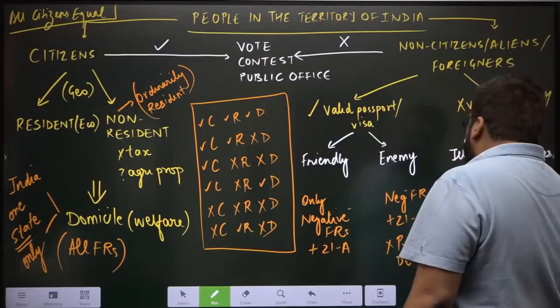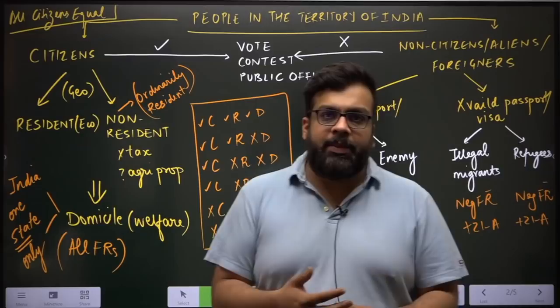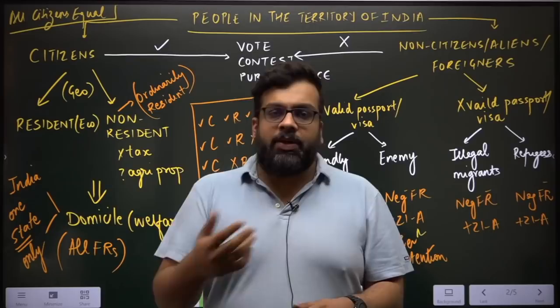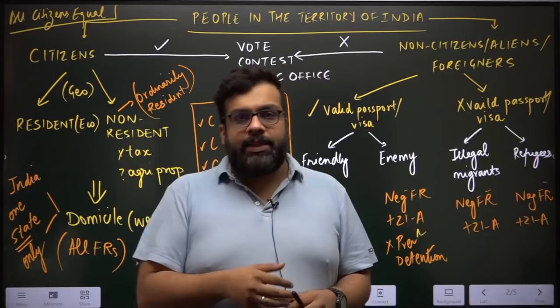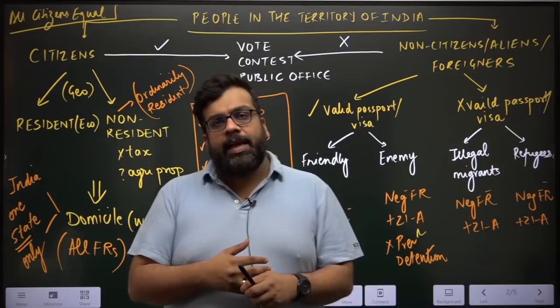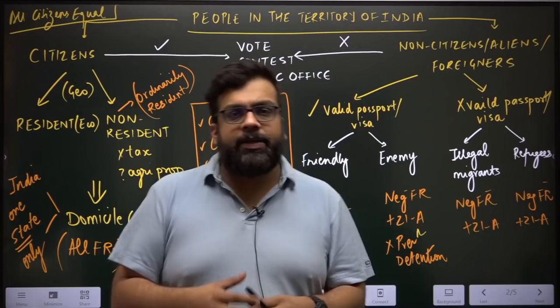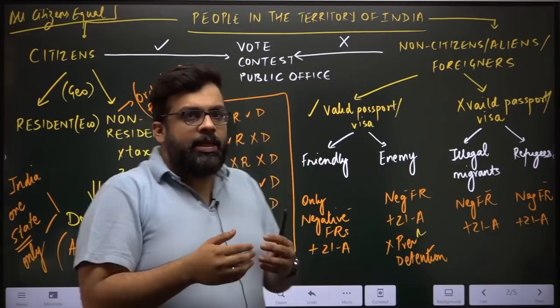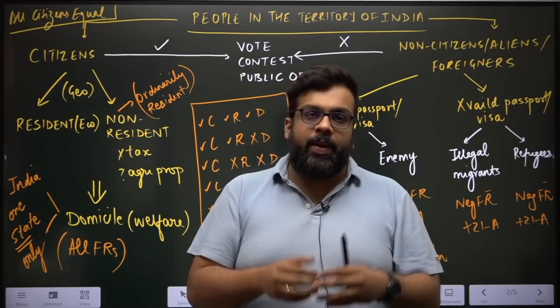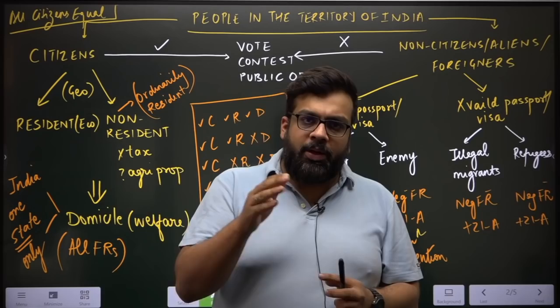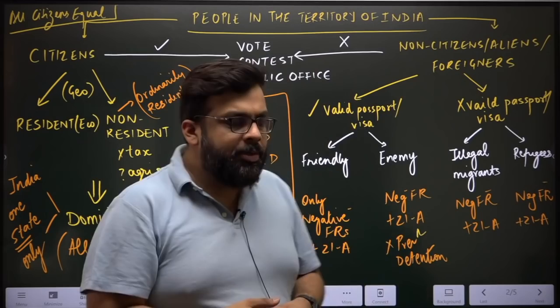Let us begin with the dimensions of citizenship. Just like territory has multiple dimensions — physical, economic, technological — citizenship also has multiple dimensions which are often interrelated. The concept of citizenship originates from where territory ends, which is why citizenship has been placed right after the portion on territory in the Constitution. Where the Constitution refers to territory in Part 1, it refers to citizenship in Part 2.